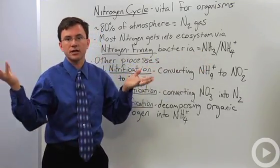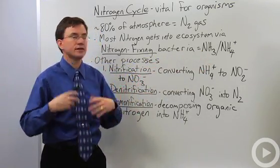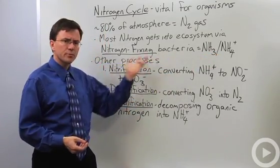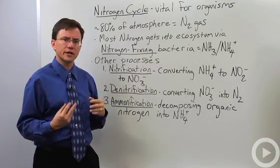Ammonia winds up volatizing as a gas if they don't use it and that's why when it hits water converts into ammonium. Now there's a number of other processes involved in the nitrogen cycle.